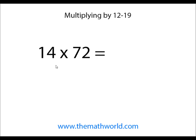The first example we're going to be going over is 14 times 72. The first thing we're going to do is multiply the ones digit from both numbers. In this particular case, 4 times 2. We're going to go ahead and write down 8.